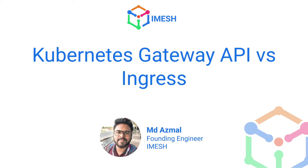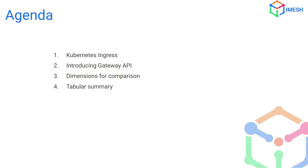Hello everyone, my name is Mohamed Azmail. I'm the founding engineer of iMesh and in this session we'll have a look at Kubernetes Gateway API versus Ingress. We'll understand what Kubernetes Ingress is, how it works, how the Gateway API works, and their differences. We'll be comparing them on the basis of a few features we usually expect from a traffic management solution, and then we'll also look at some code examples to see how Gateway API and Ingress compare on the developer experience side of things.